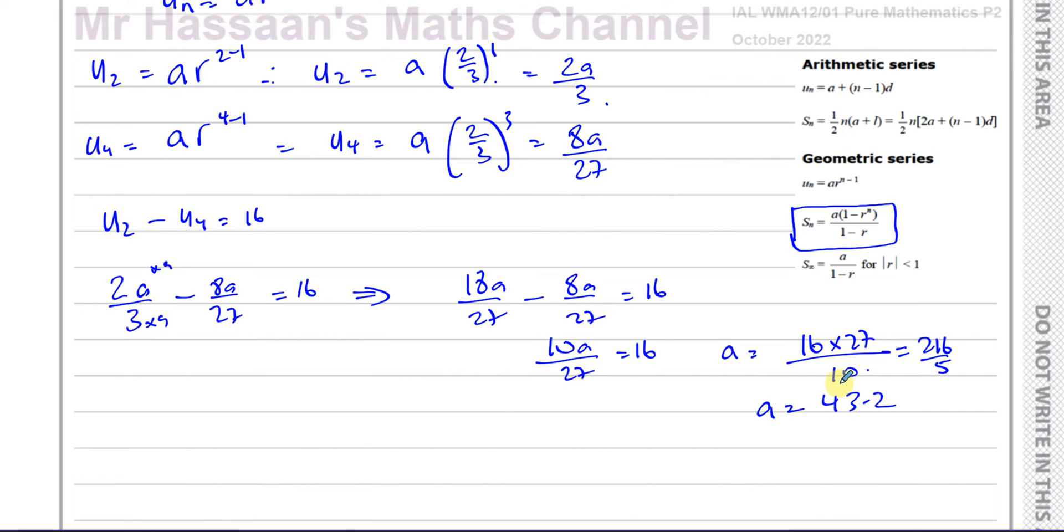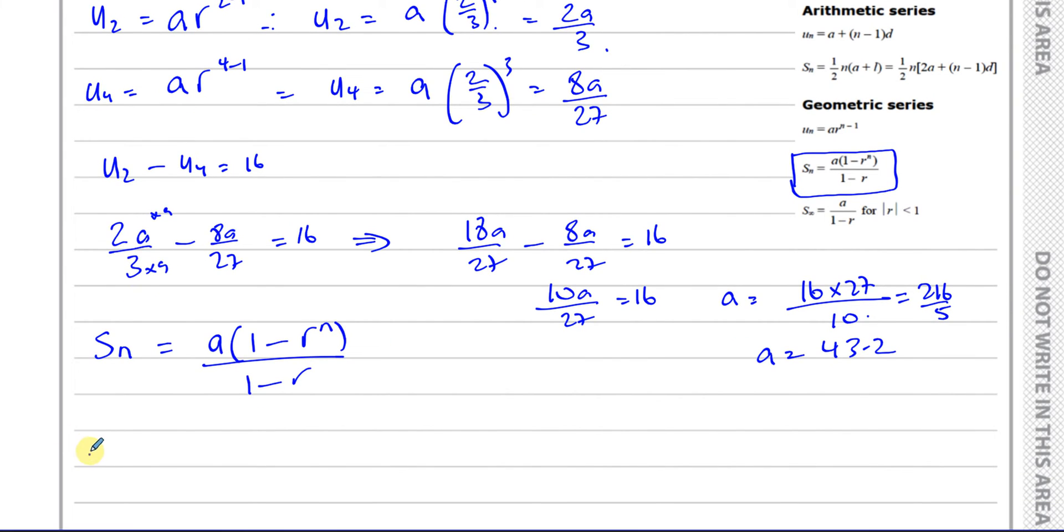Now I know that the sum to the N terms is equal to A times one minus R to the power of N over one minus R. I know A is 43.2, I know R is two-thirds, and I know that N is equal to 10. So I can say that the sum to the first 10 terms is equal to 43.2 times one minus two-thirds to the power of 10 over one minus two-thirds.